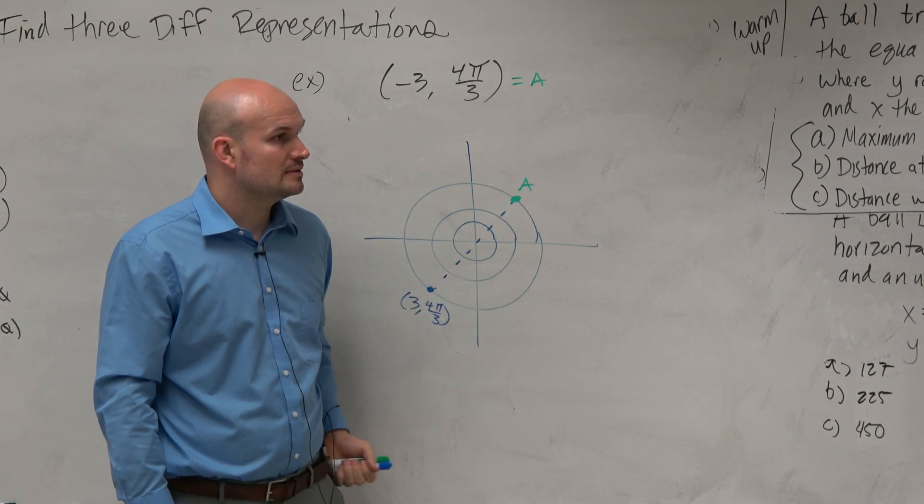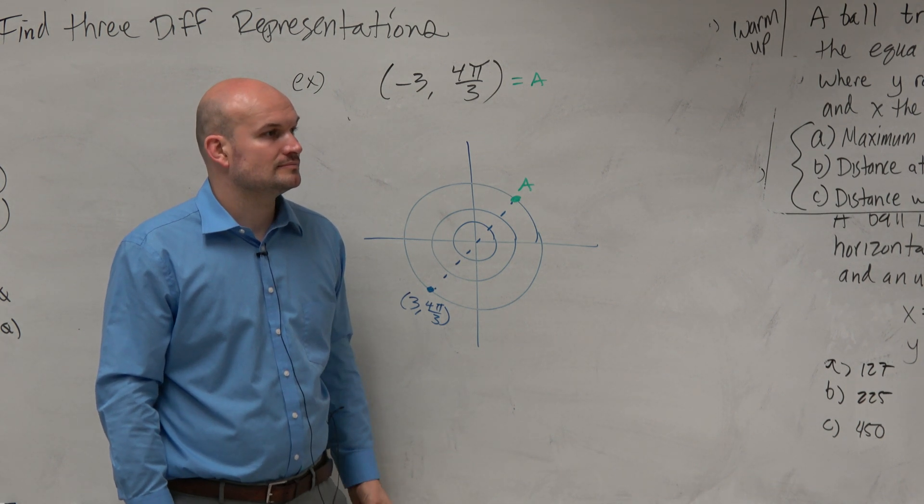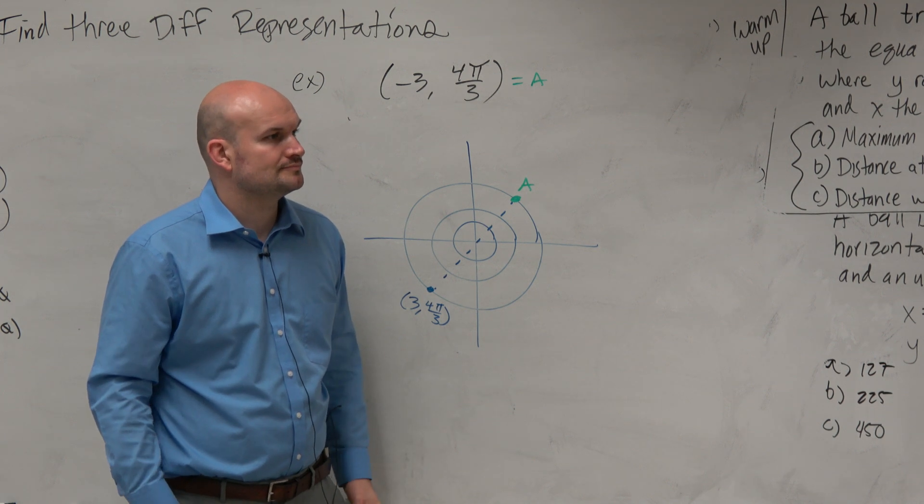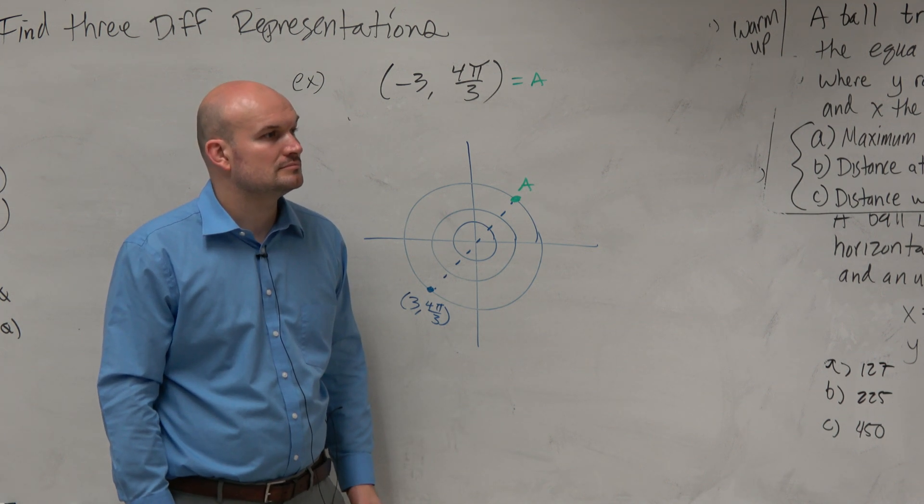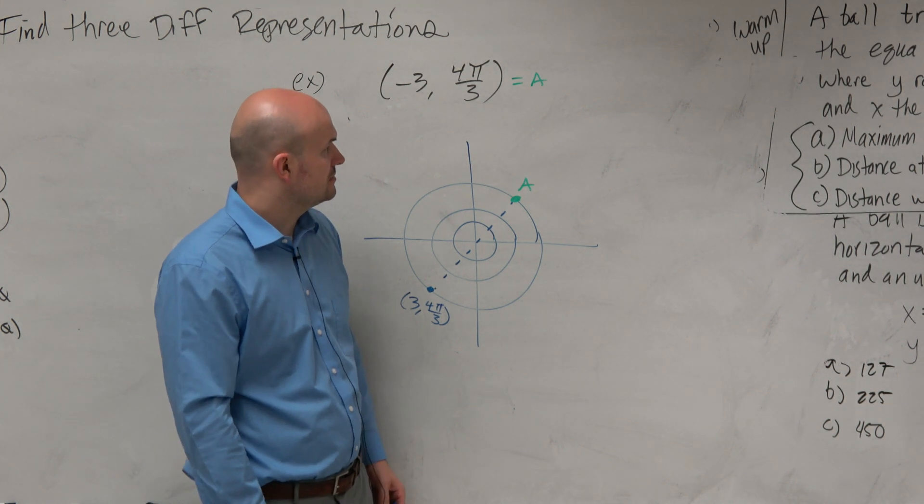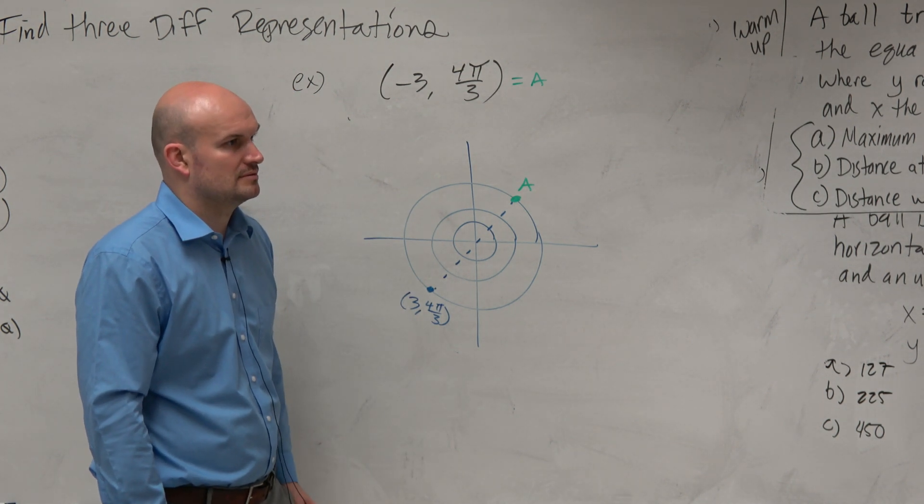Student asks: If there's an infinite amount of different ways you can represent it, then how do you know if it's a negative 3 it would be in the first quadrant, and if it's a positive 3 it's in another? Not necessarily, it depends. It depends on the angle that you're given.